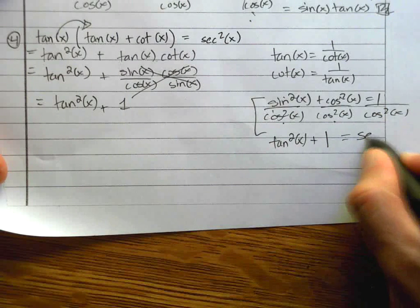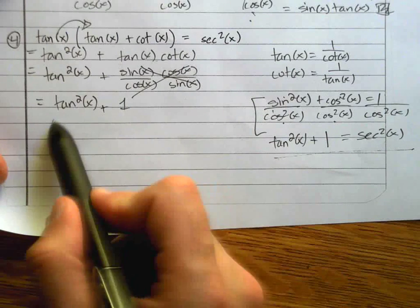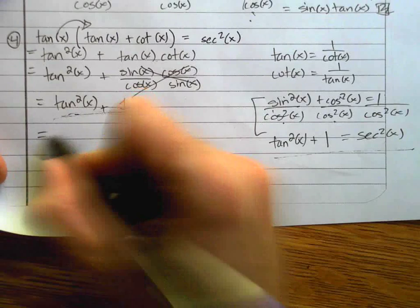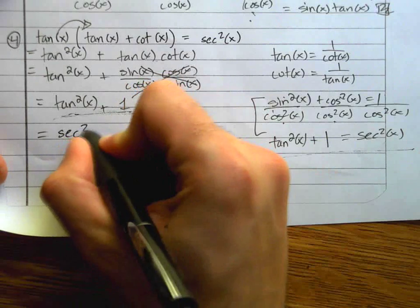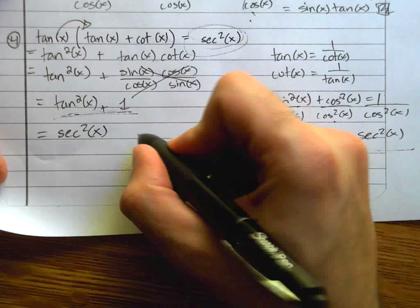So look what we have. We have a proof right here that shows us that tangent squared plus 1 literally equals secant squared, which is what we were trying to prove. So we're done. That means I'm done.